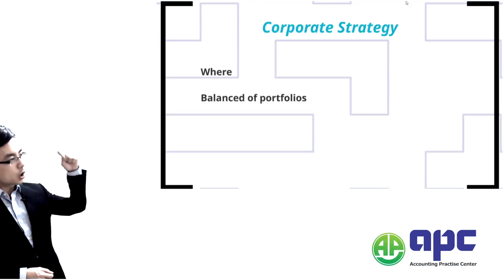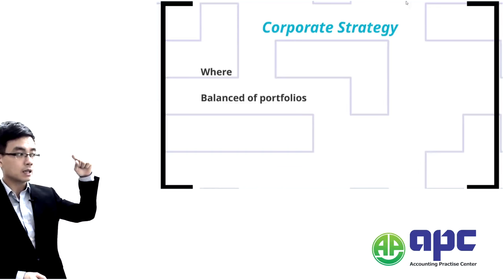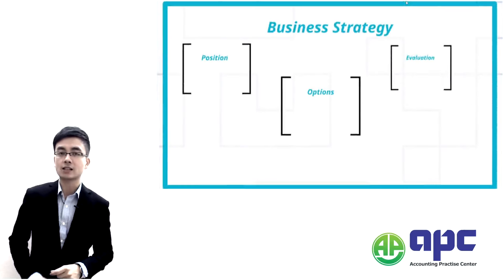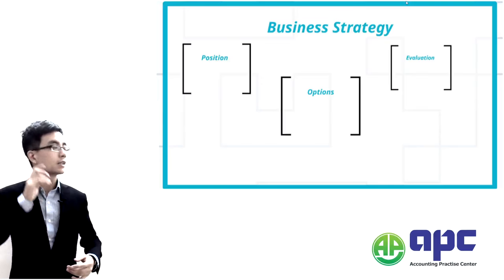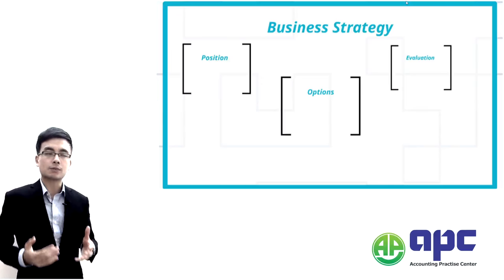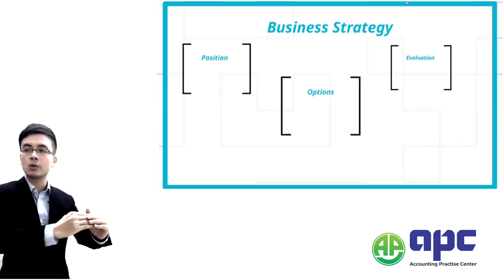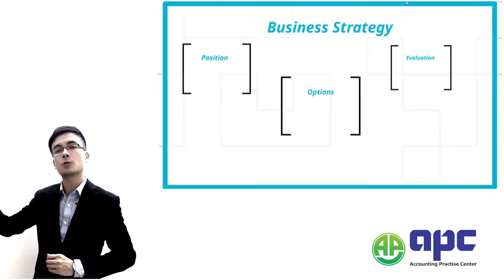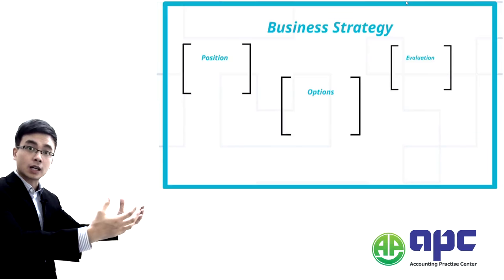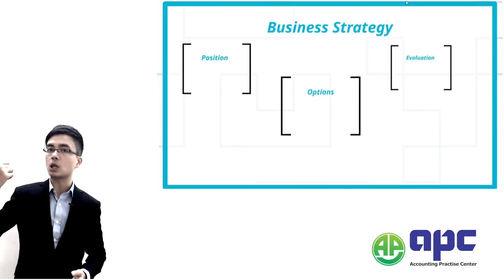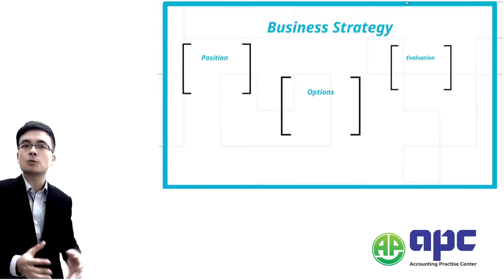Once corporate strategy tells us which industry we should be in, we move to business strategy, which tells us how we're going to compete with our competitors. For example, we may lower down our prices, develop a new product, expand into a new market by building an online shop, or expand overseas — all of these are business strategy options.